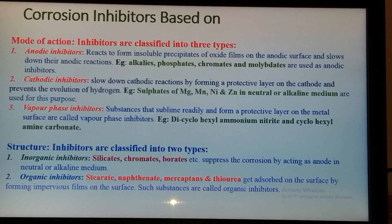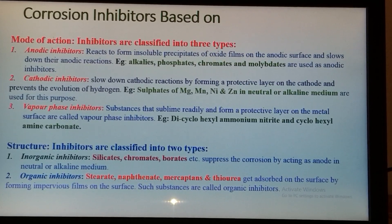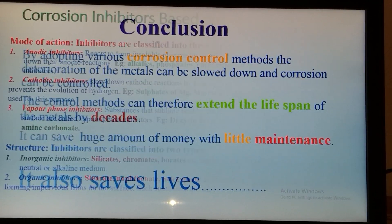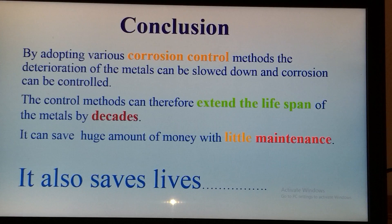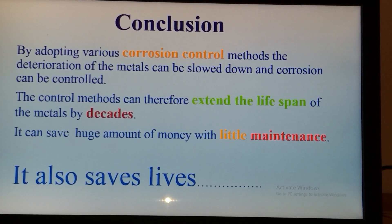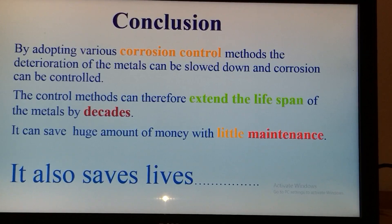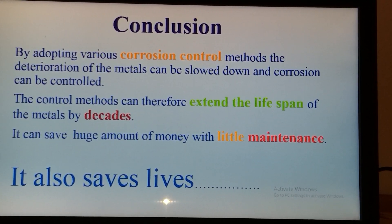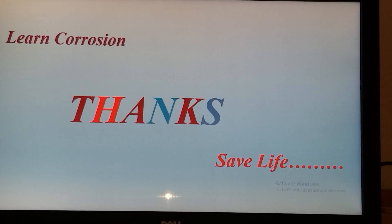After completing the entire chapter on electrochemical corrosion — including factors affecting the rate of corrosion and corrosion control methods — we can conclude that by slowing down the corrosion rate and adopting various control methods, the life span of metals can be extended by decades. Knowledge of corrosion and its control can protect a huge amount of money with little maintenance, and it also saves lives. So learn corrosion and save lives.